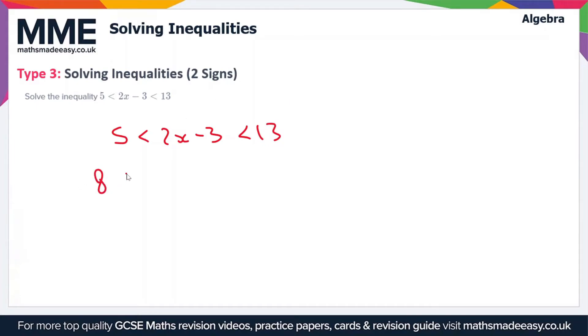So we're going to get 8 is less than 2x, which is less than 16. So we've added 3 to all parts of this expression.